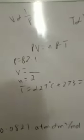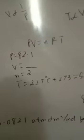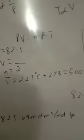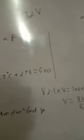I have to tell you that the pressure is 82.1 atmosphere, the number of moles is 2, temperature is 227 degrees centigrade. We will do 273 plus. It will be 500 Kelvin.